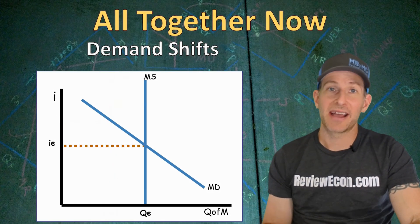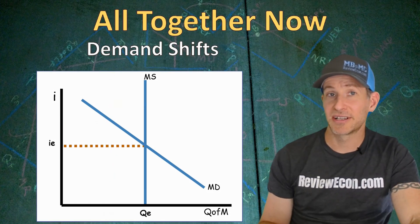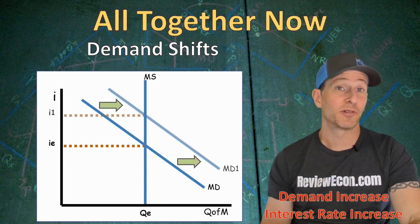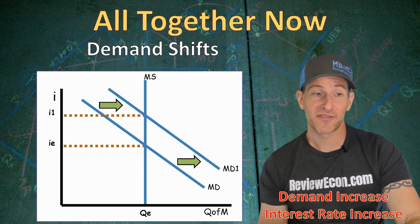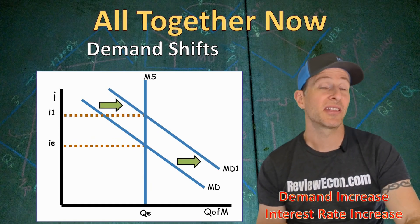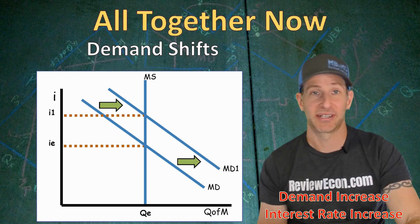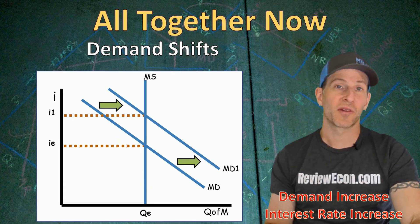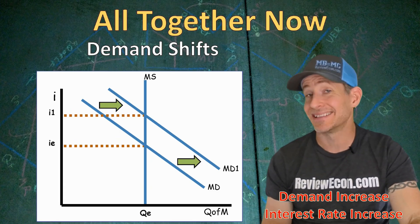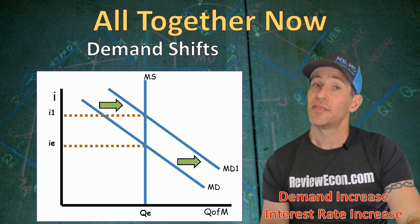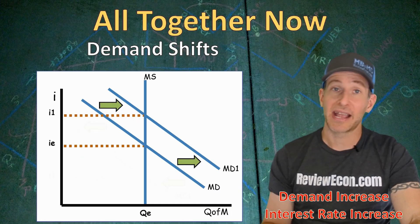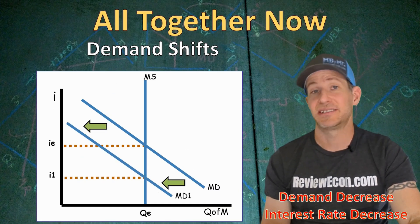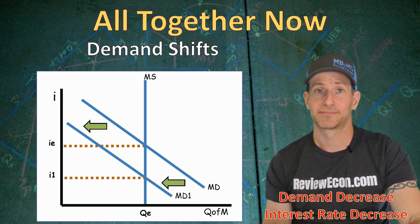If we have demand curve shifts — for example, an increase in the transaction demand for money — that will increase the overall demand for money, causing the nominal interest rate to increase. And if people choose to hold more of their wealth in interest-bearing assets instead of money, we will see a decrease in the demand for money, which will lead to a decrease in the nominal interest rate.